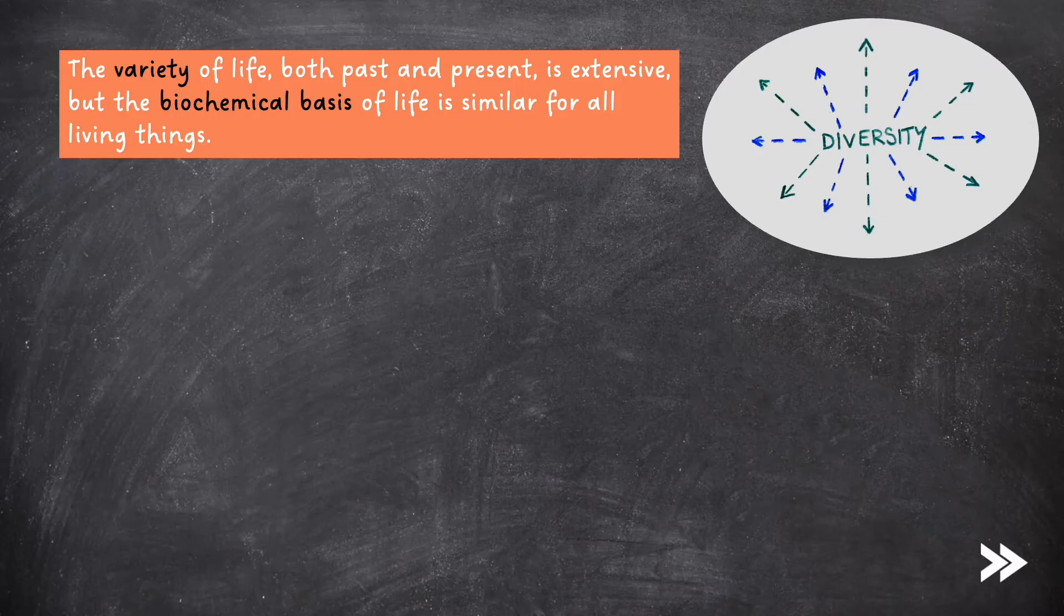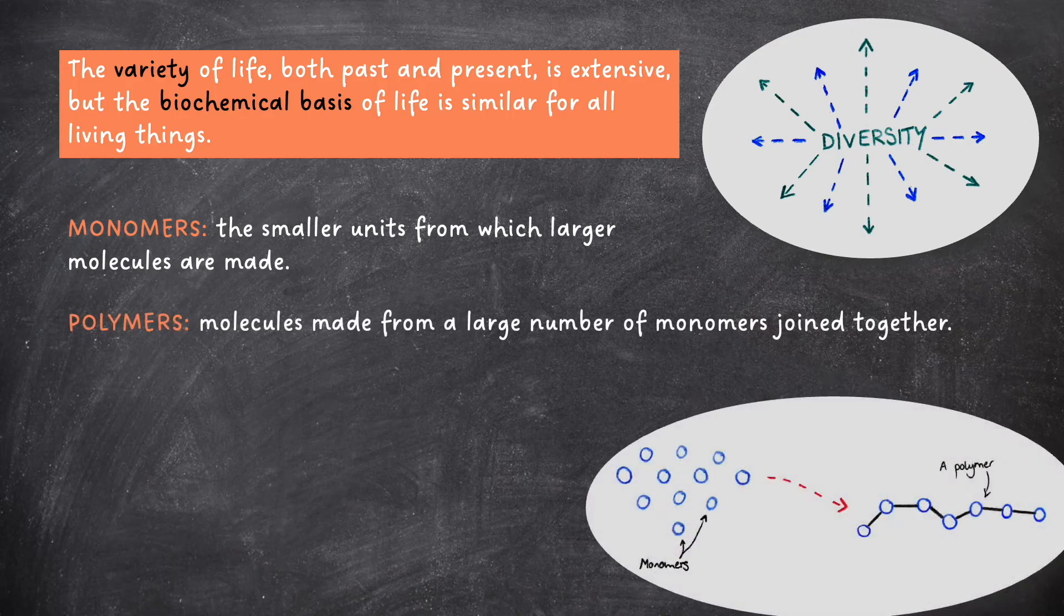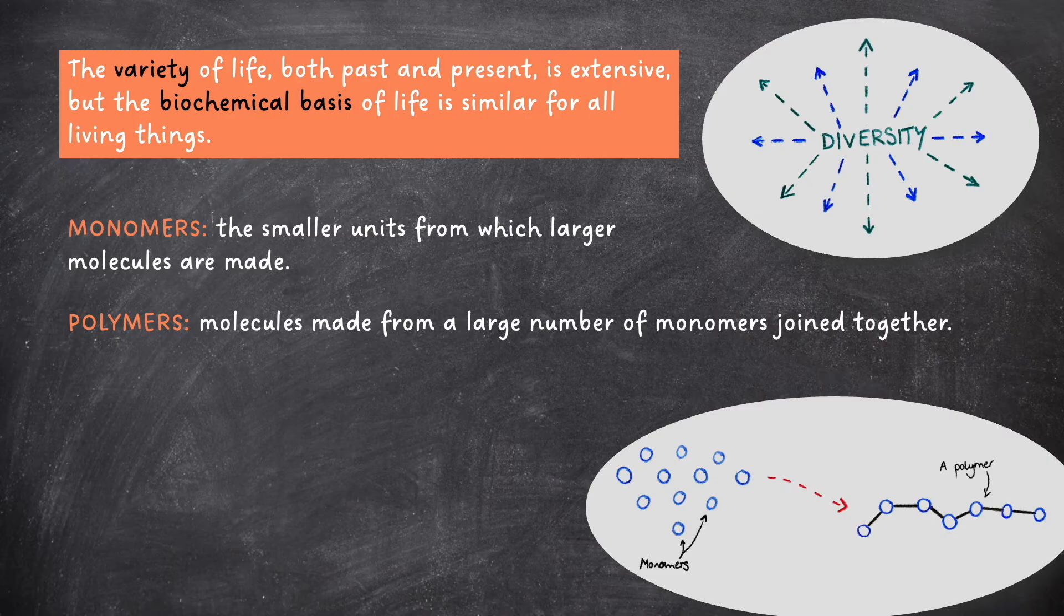Here we have the specification definitions which you'll need to be able to recall in exams. Monomers are the smaller units from which larger molecules are made, and polymers are molecules made from a large number of monomers joined together.